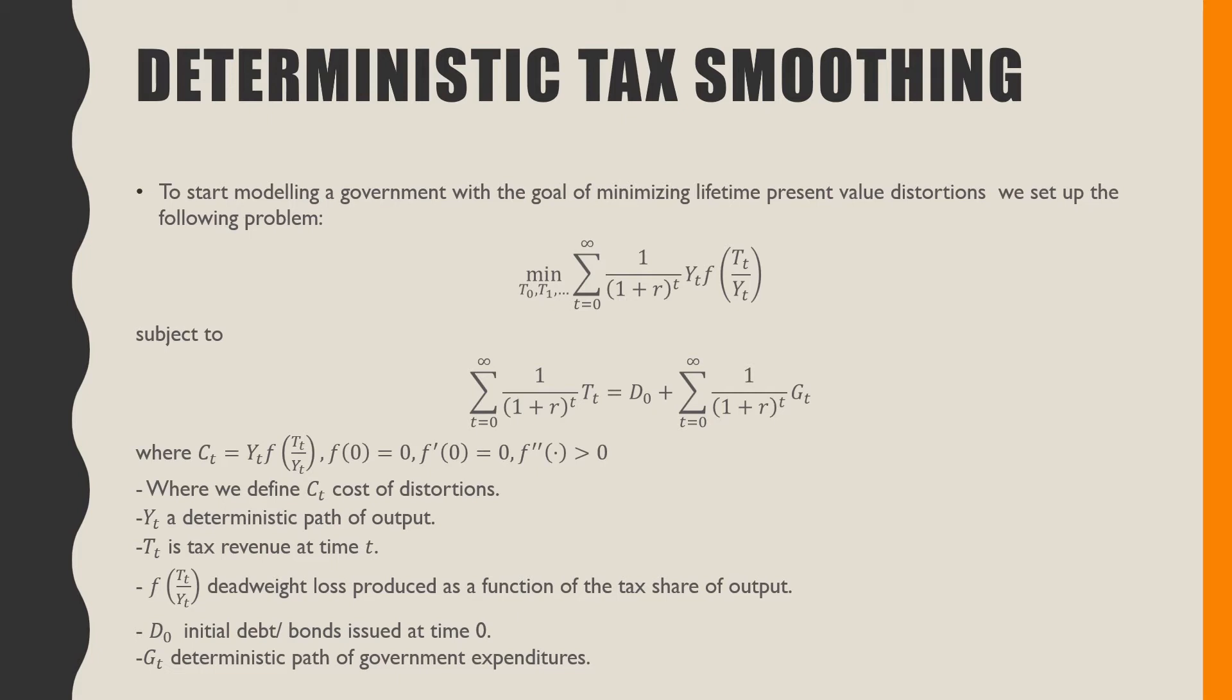Yt is a deterministic path of output, meaning there's a certain amount known with certainty of what output will be produced every period t. Tt is the tax revenue at time t, and f(Tt/Yt) is the deadweight loss produced as a function of the tax share of output. D0 is the initial debt or bonds issued at time zero, and Gt is a deterministic path of government expenditures. The choice variable is our path of taxes.